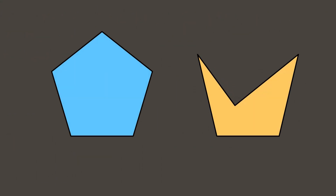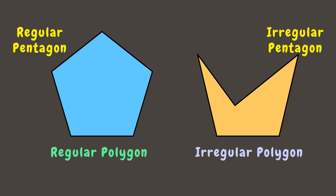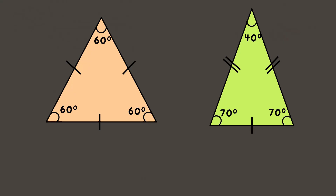By simply looking at these two polygons, we can say that the first one is a regular polygon since it looks like it has equal sides and equal angles, while the other one is an irregular polygon since its sides and angles are not equal. Since this polygon has five sides, we call it a regular pentagon, while the other one would be an irregular pentagon.